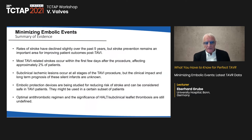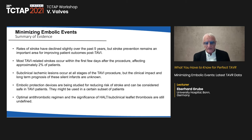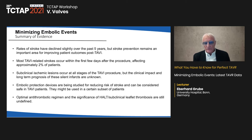In summary: rates of stroke have declined slightly over the past five years but stroke prevention remains important. Most TAVR-related strokes occur within the first few days, affecting approximately 2% of patients. Subclinical ischemic lesions occur at all stages but their long-term impact is unknown. Embolic protection devices can be considered safe and may be used in certain subsets. Optimal antithrombotic regimen and the significance of HALT and subclinical leaflet thrombosis are still undefined and need to be resolved.